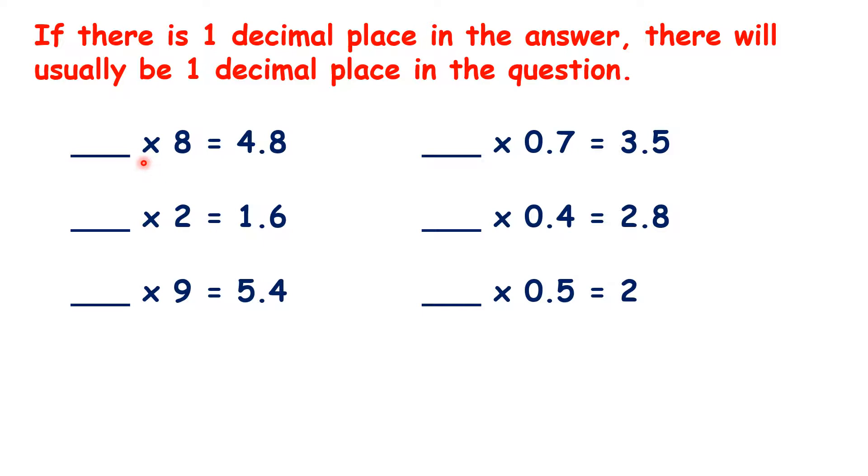So our first question is something times 8 equals 4.8, and if we know that 6 times 8 is 48, we know that 0.6 times 8 must be 4.8, so that we have one decimal place in the question.